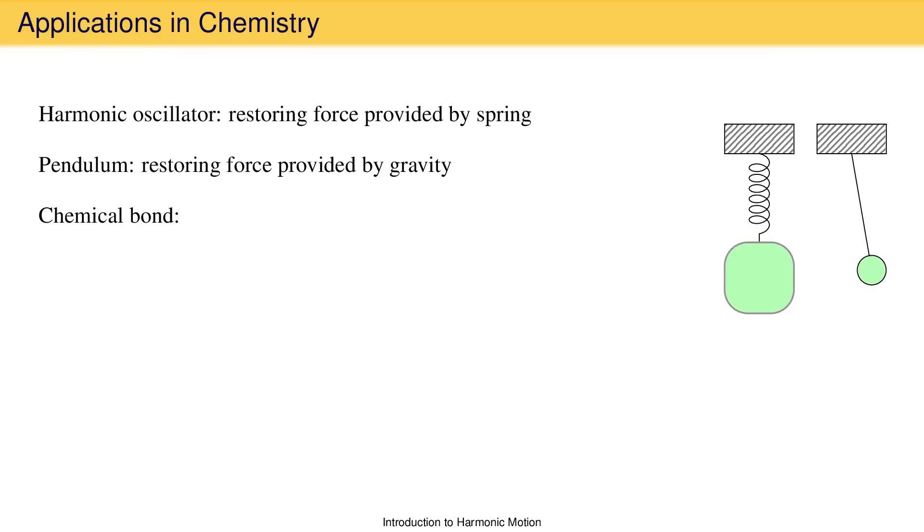It turns out that a chemical bond provides a restoring force that can be considered mostly harmonic. Because of this, we can model bonds and molecules as though they are springs, and this is very helpful in all sorts of calculations. To emphasize this, we sometimes draw two bonded atoms, such as two nitrogen atoms, with the bond lines replaced with a spring.